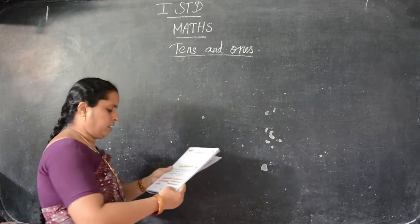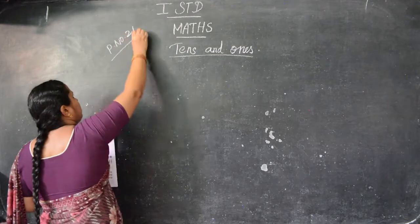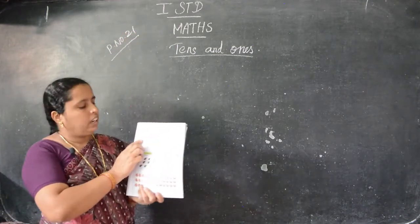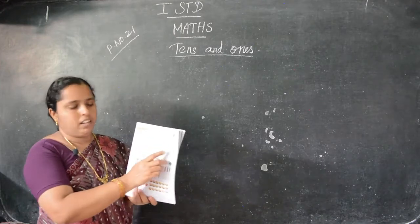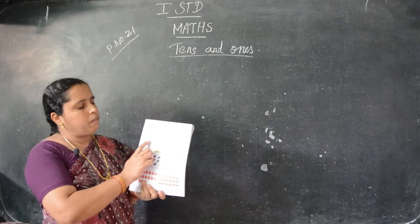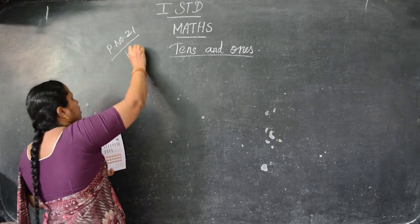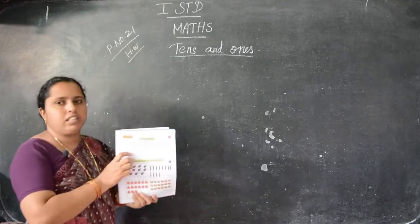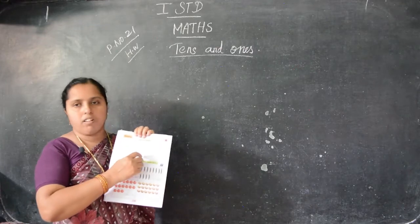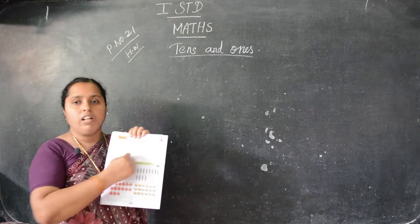Take page number 21. All of you take your book — take page number 21. Here see, numbers 11 to 20 are given. You have to trace the numbers and in the empty boxes you have to write the number. This is the homework — page number 21, home work. You have to do yourself children. First you trace these numbers and fill the empty boxes: 11, 11, 12, 13, 14 — like that you have to fill the boxes.